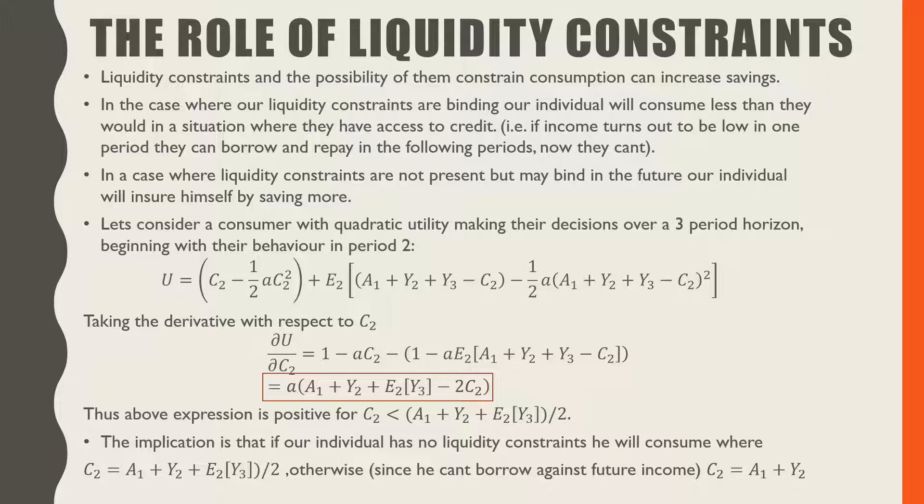So to understand this, let's consider the case of a consumer making decisions using a quadratic utility function over three periods, beginning with our analysis of our consumer's behavior in period three. So we have our consumer's lifetime utility function from period two to three.